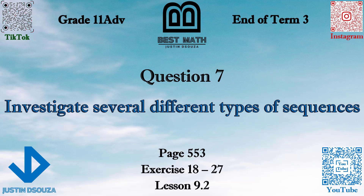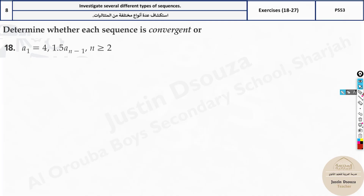We investigate several different types of sequences to find which are convergent and which are divergent. Looking at this formula, you can see this is an implicit formula — you cannot find the value of a5 without knowing a4.